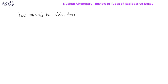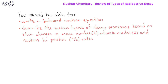After watching this video, you should be able to write a balanced nuclear equation. You should also be able to describe the various types of decay processes based on the changes in mass number, atomic number, and the neutron-to-proton ratio. The change in the neutron-to-proton ratio will be helpful in later videos when we try to predict the type of radioactive decay that a nuclide might undergo.